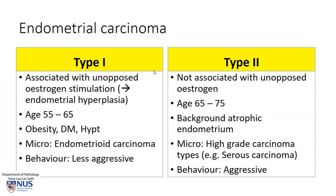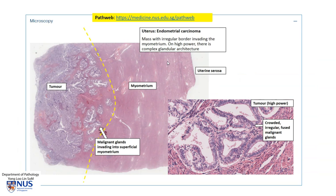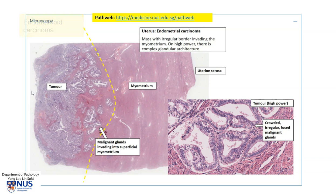Here is an example of endometrioid endometrial carcinoma under the microscope. We can see tightly packed glands which are quite branching, towards the endometrial cavity, and here is the myometrium — so these glands are actually invading into the myometrium. At higher magnification, these are the malignant glands and we can see the cells are quite columnar with rather elongated nuclei, but it looks relatively well differentiated with not a great deal of nuclear pleomorphism. These glands are directly sitting in the myometrium, hence there is myometrial invasion.